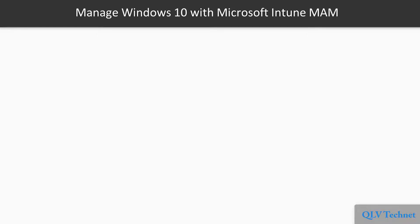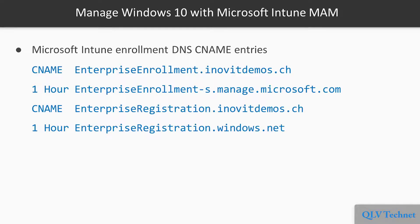To manage our Windows 10 client, we will use the Microsoft Intune mobile application management functionality to provide a short introduction into the management capabilities of Intune for Windows 10 clients. As a requirement, we need to create two CNAME entries in your public DNS to use Microsoft Intune — one for the enterprise enrollment and one for the enterprise registration process. Next we will see how we can enable users to enroll their devices in Azure Active Directory and set some limitations for this process.